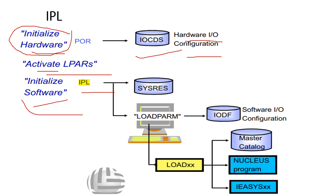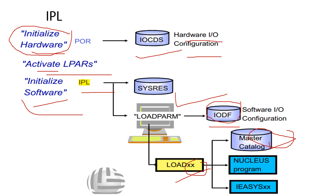IODF is the device number of the volume containing the IODF data set, also called the SYSRES. LoadXX is the load parameter where XX is the ID of the loadXX member — by default it is '00'. The master catalog contains pointers to system data sets, page and swap data sets, and user catalogs. In a multi-system environment the master catalog can be shared.